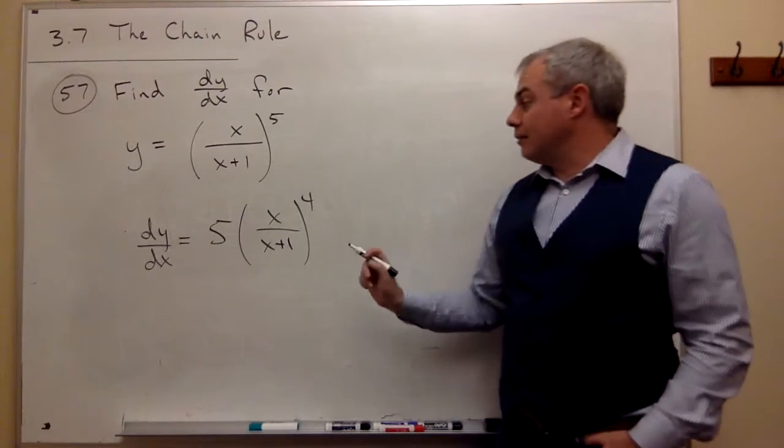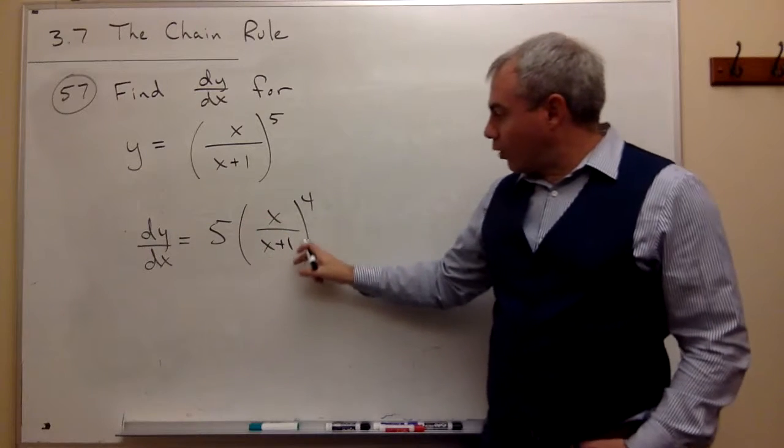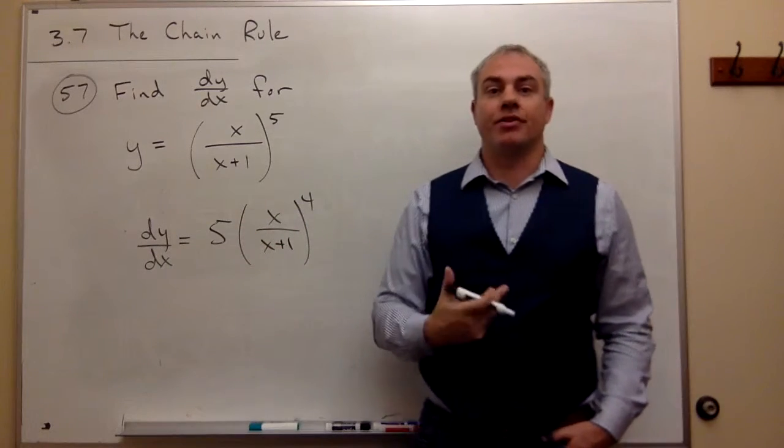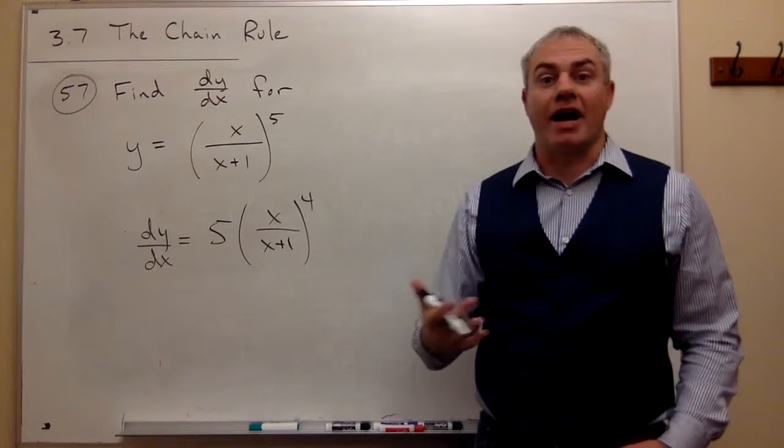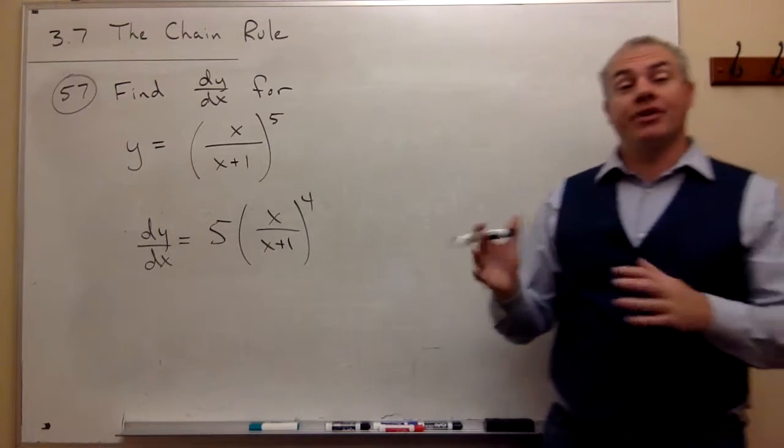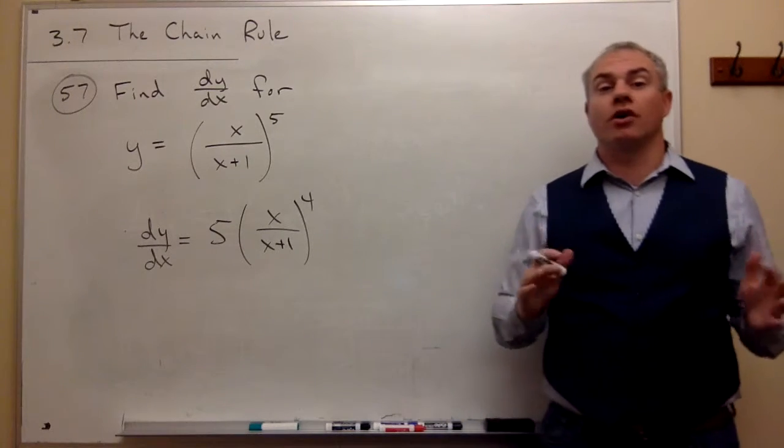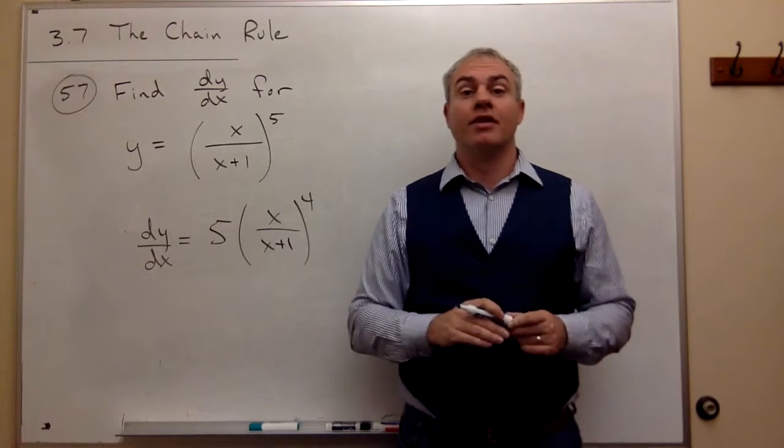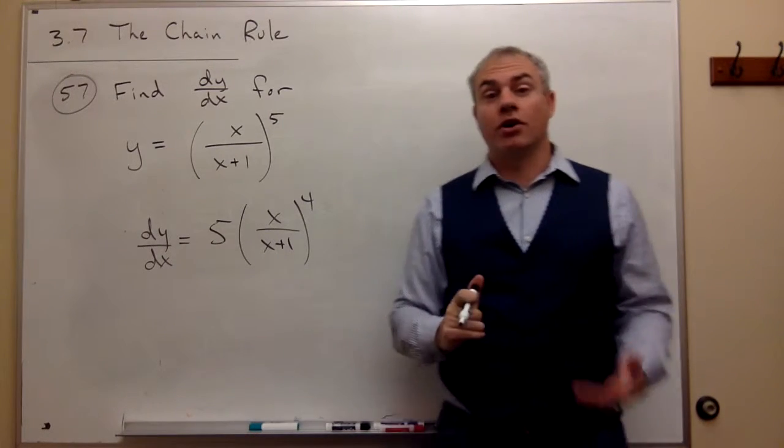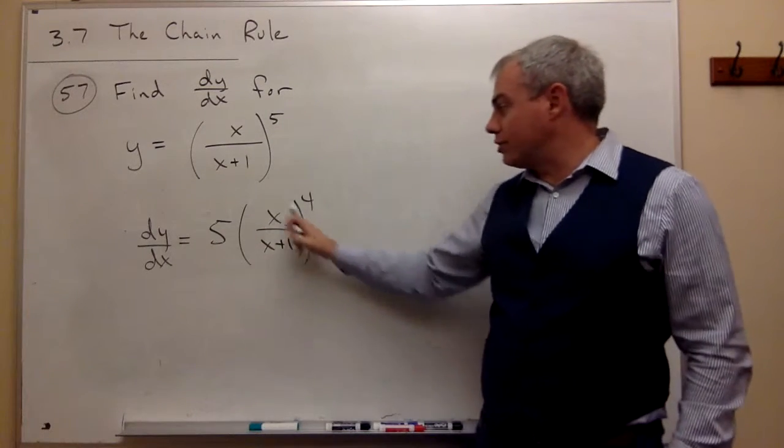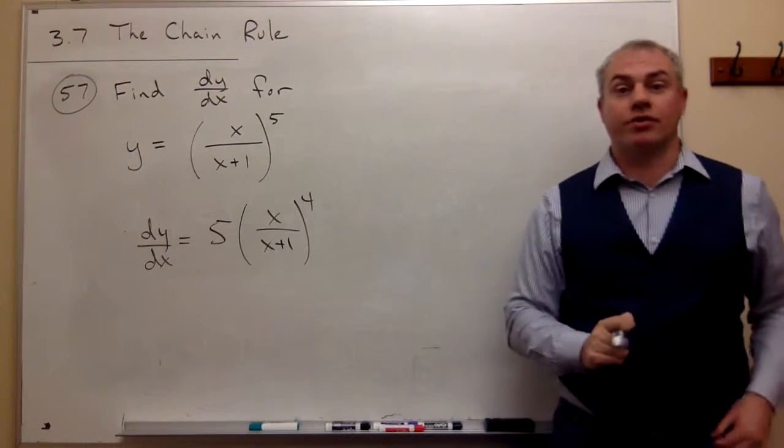Now I need to multiply by the derivative of what's on the inside. So I need to multiply by the derivative of this x over x plus 1. But now this is a totally different thing. This no longer requires any chain rule. This is a quotient. And so to take the derivative of a quotient, I need to use the quotient rule.